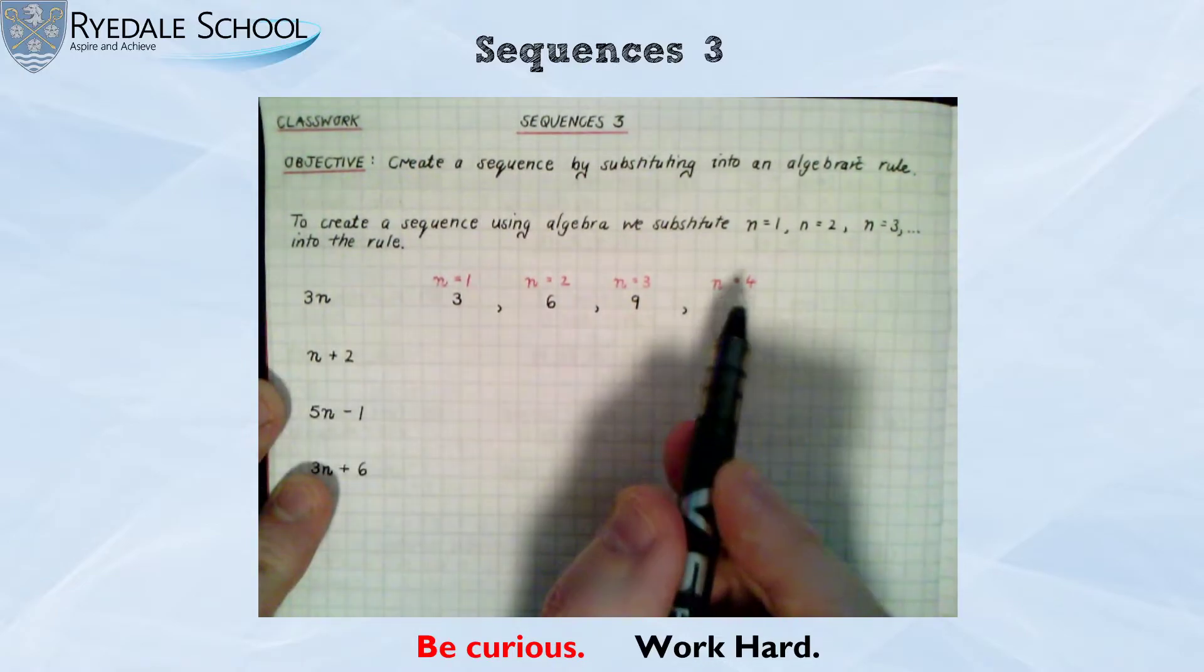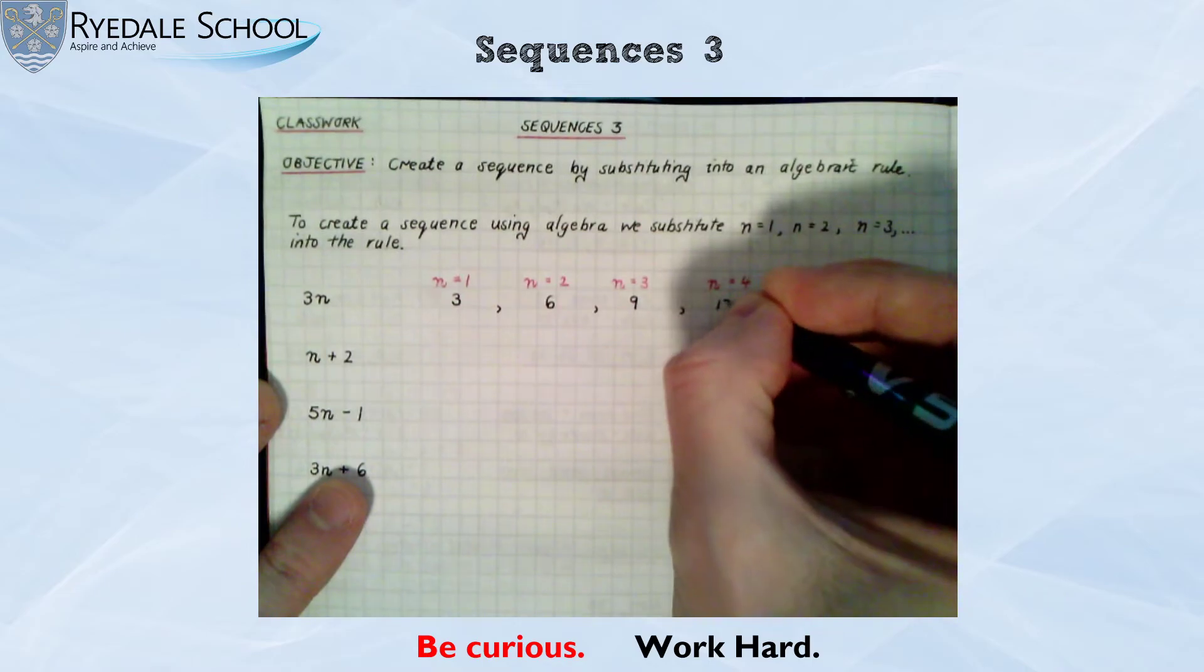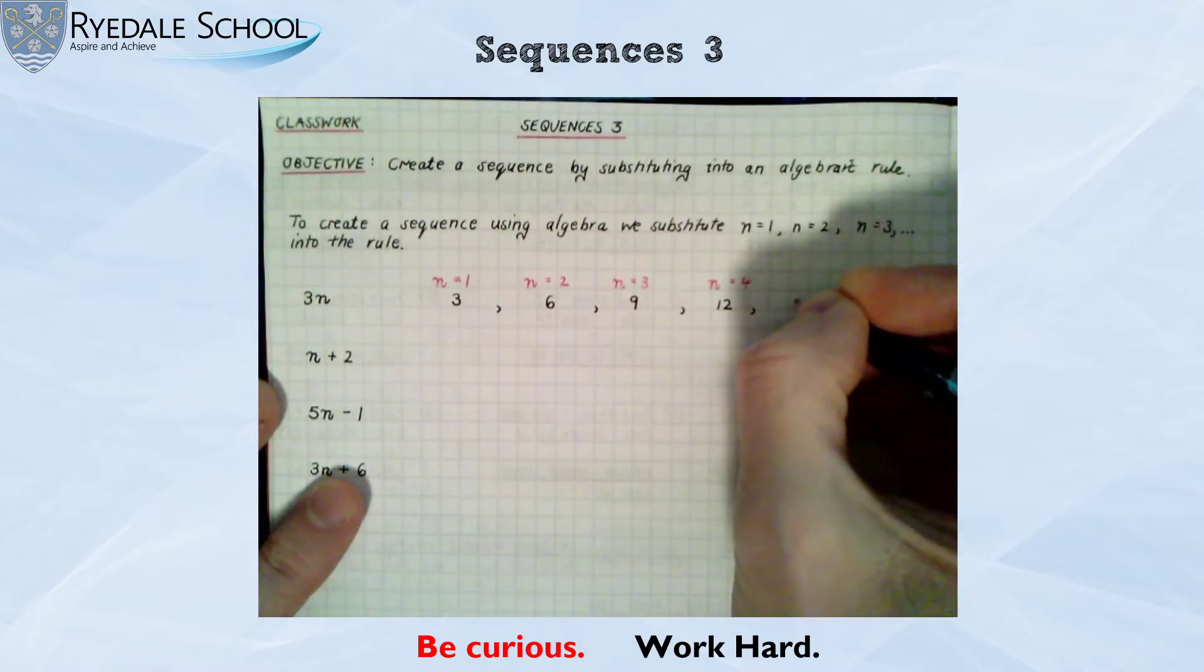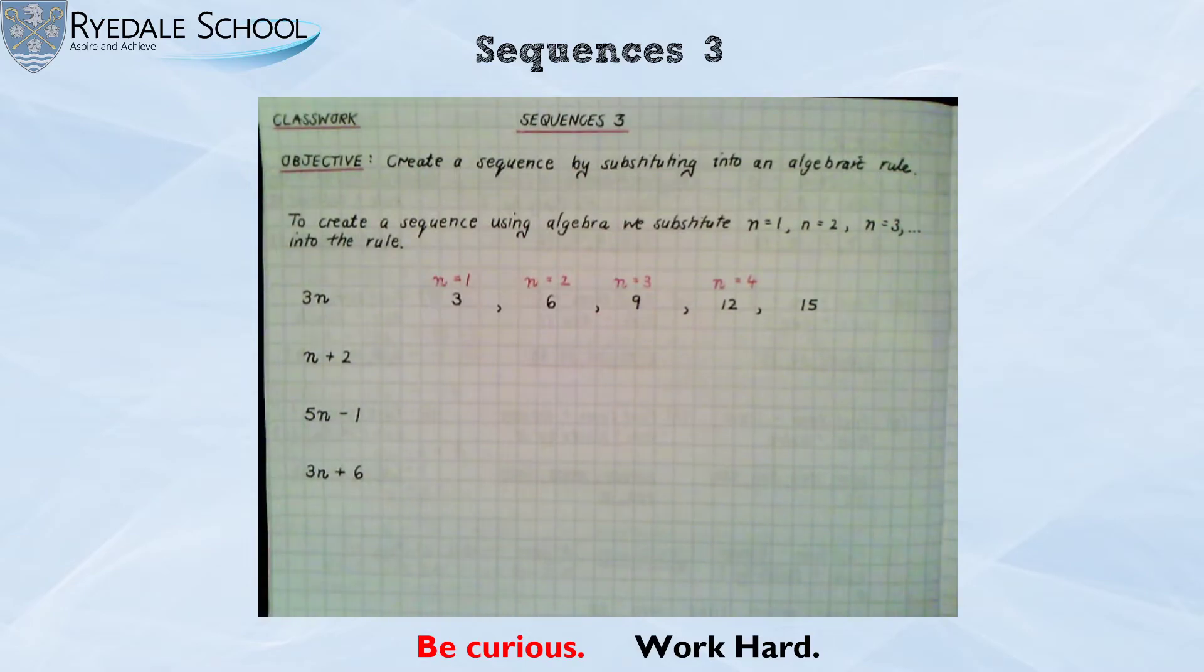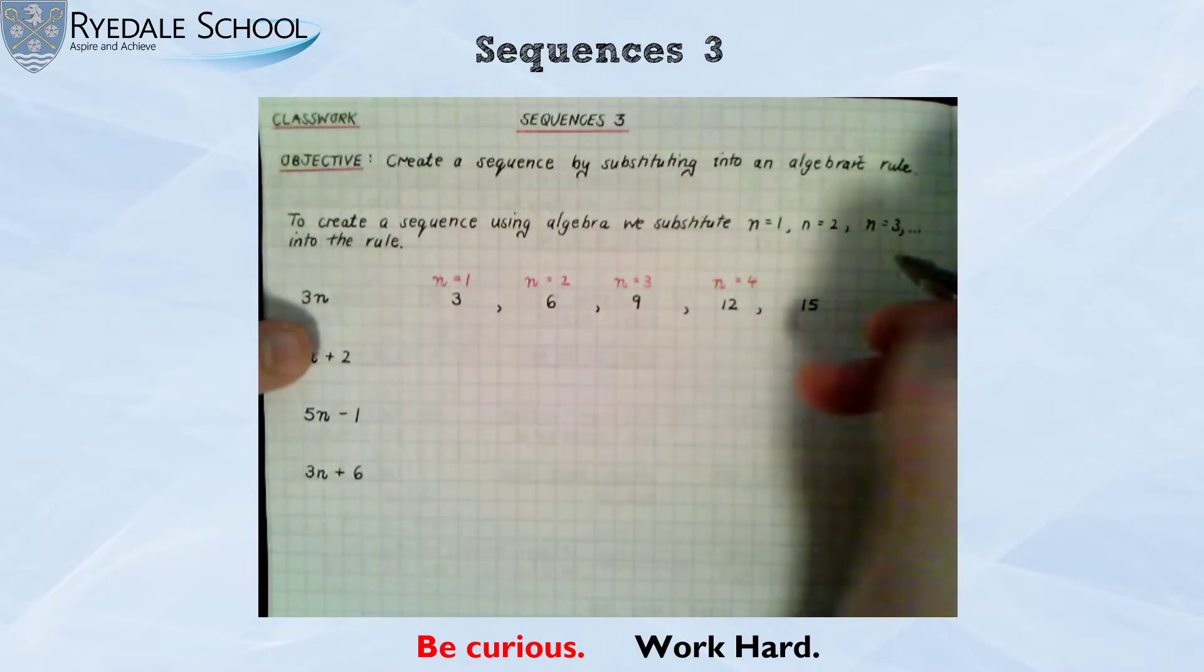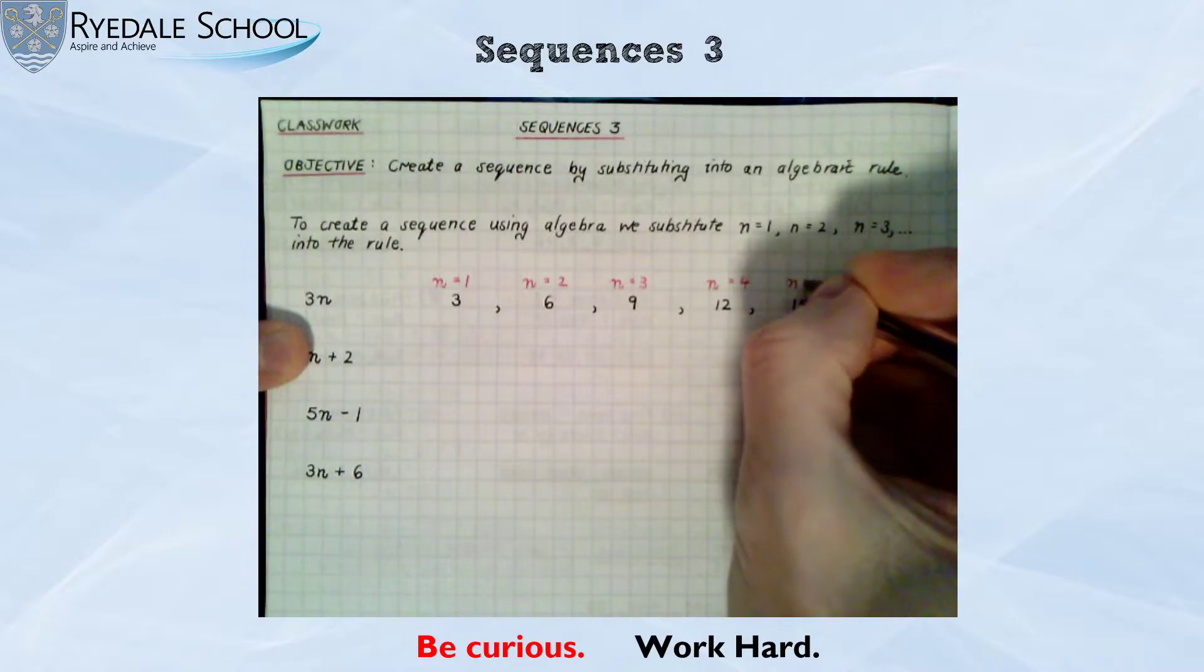Yeah this sequence is going up in 3s. So I need to do 3 times 4 is 12. Yes the next number after that would be 15. That would be when n equals 5.